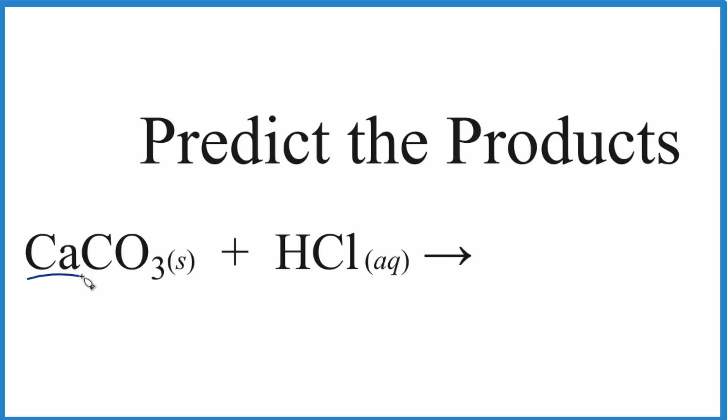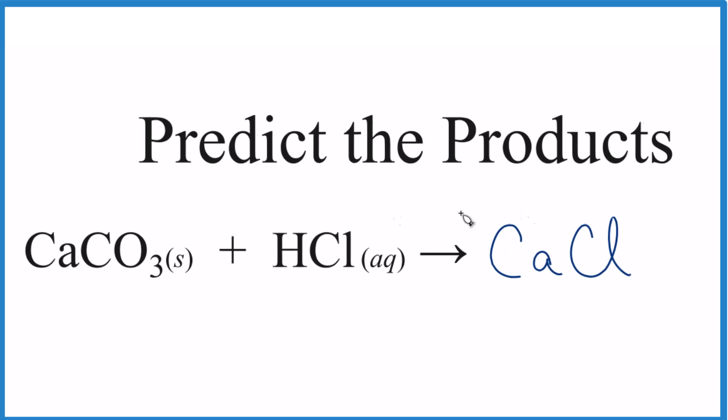Here we have calcium carbonate and then hydrochloric acid HCl. These are positive ions here, so they're probably going to switch places in a double displacement. This is likely to be a double displacement reaction, and if we use that we can predict the products because calcium goes with the chlorine and then hydrogen goes with the carbonate.